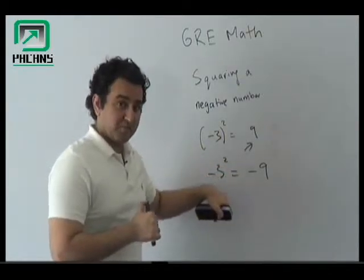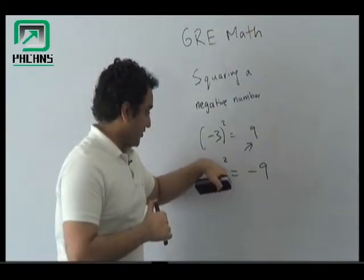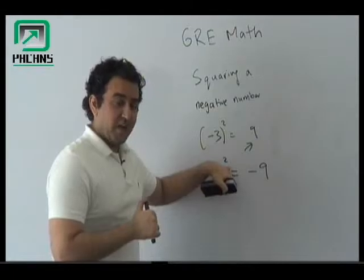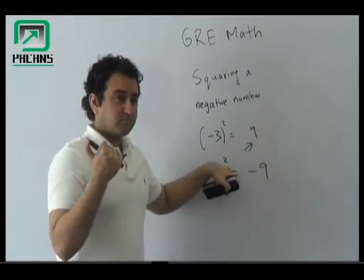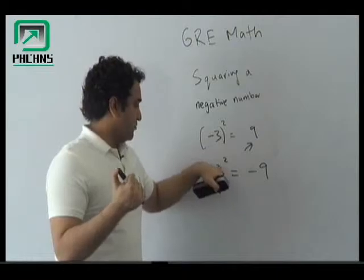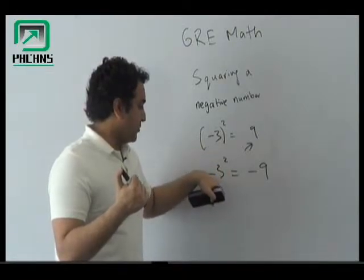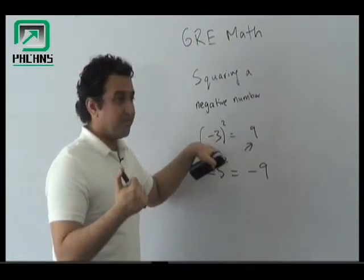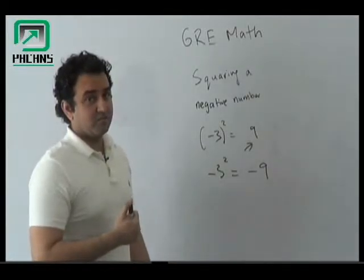Because what happens with minus three squared is that first three squared would be done, as we would be following the PEMDAS rule, and then we would be adding or putting the negative sign. So we should be having a bracket in order to make it positive.